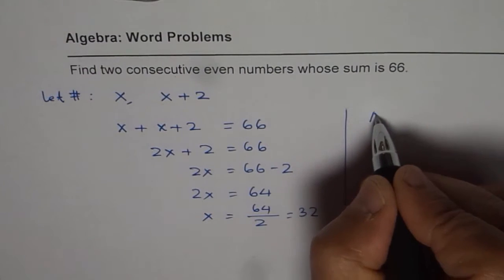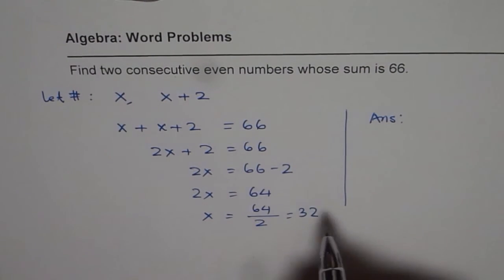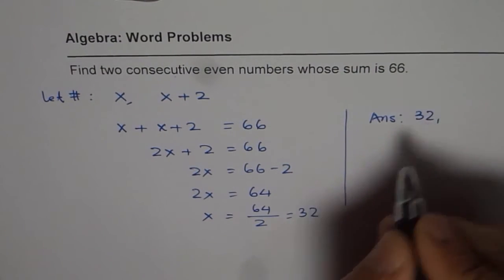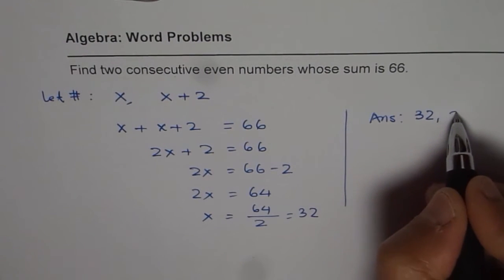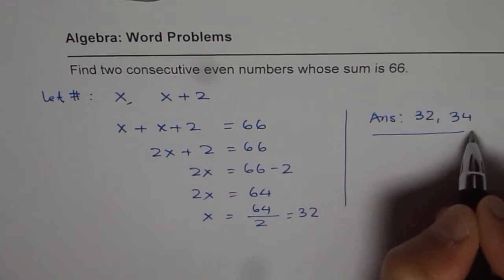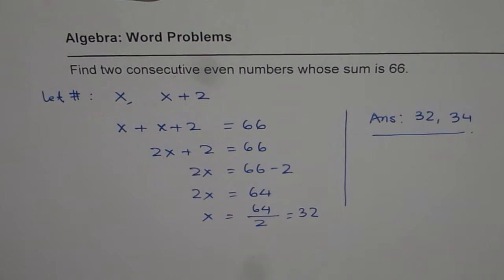And therefore, we can write down the answer: the numbers are x is 32 and the next number is plus 2, which is 34. So, that is how you can solve it. Thank you.